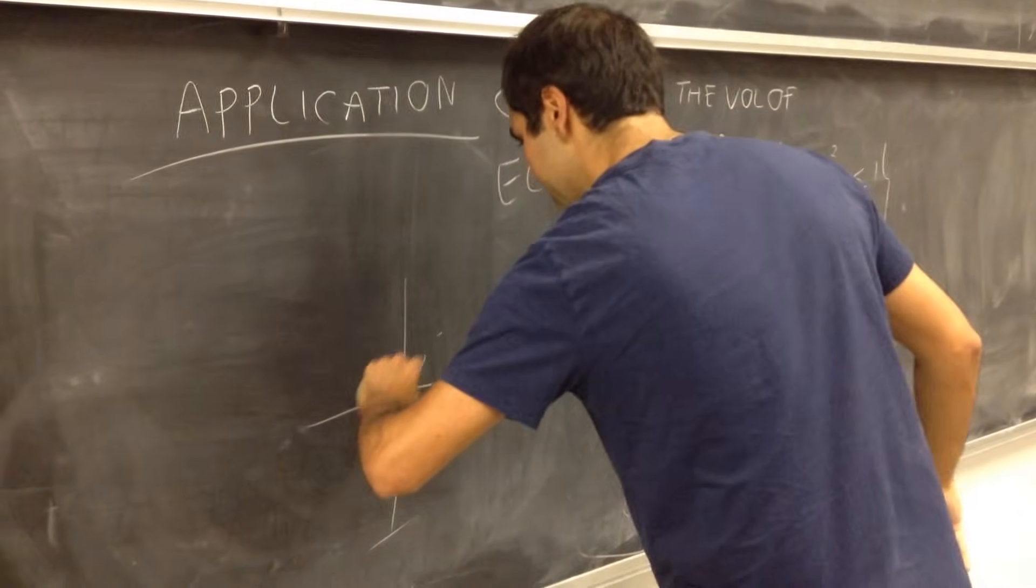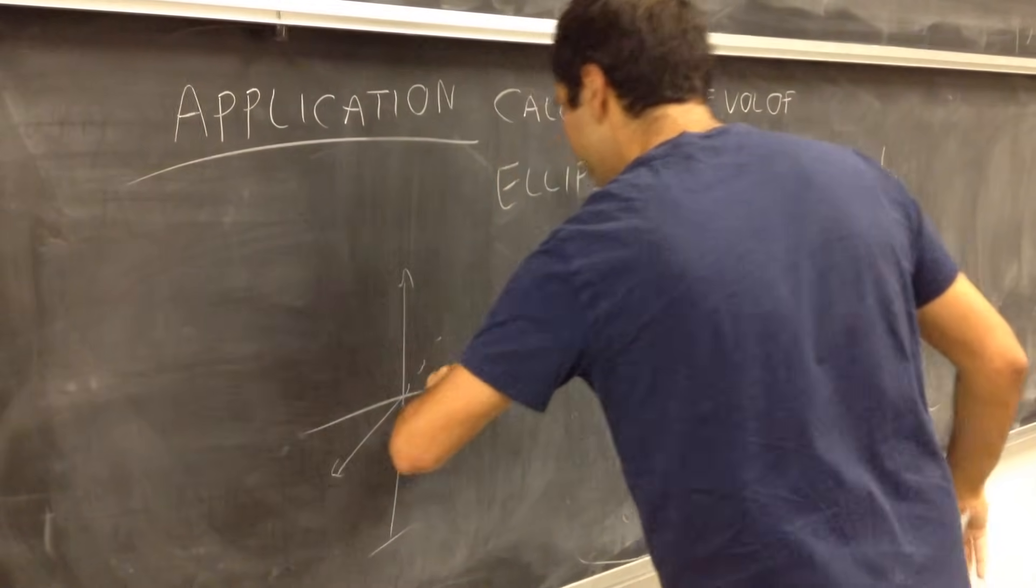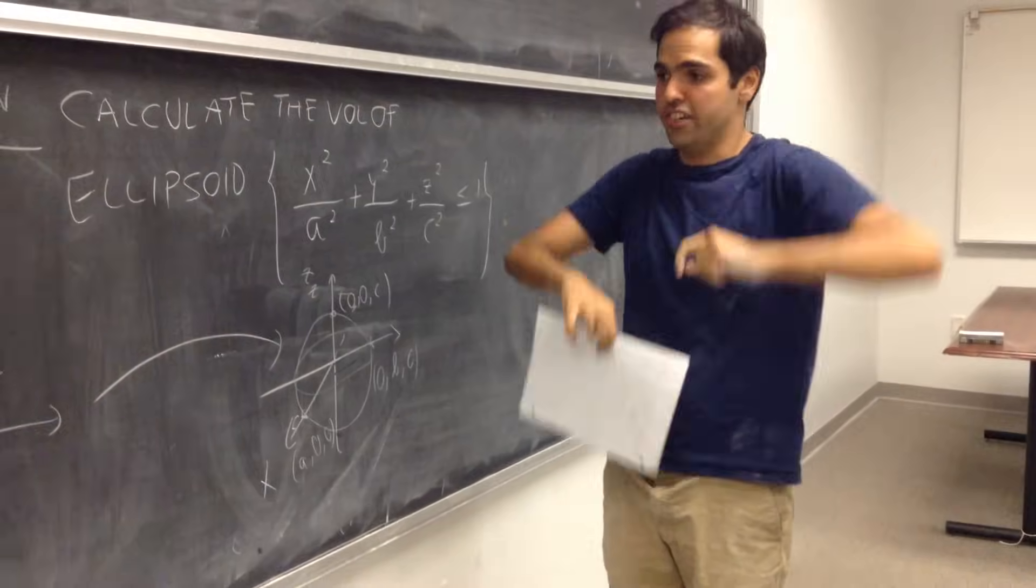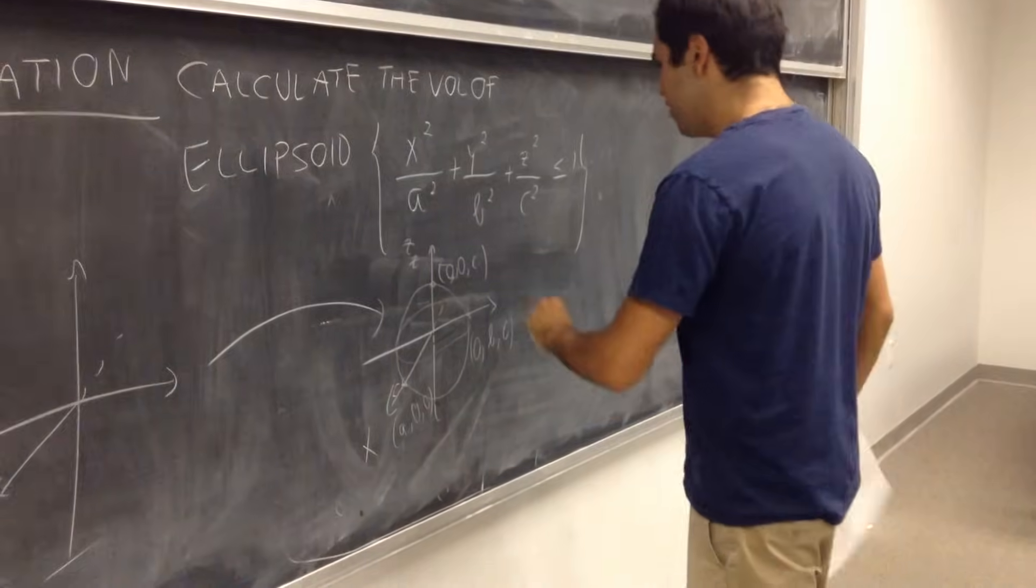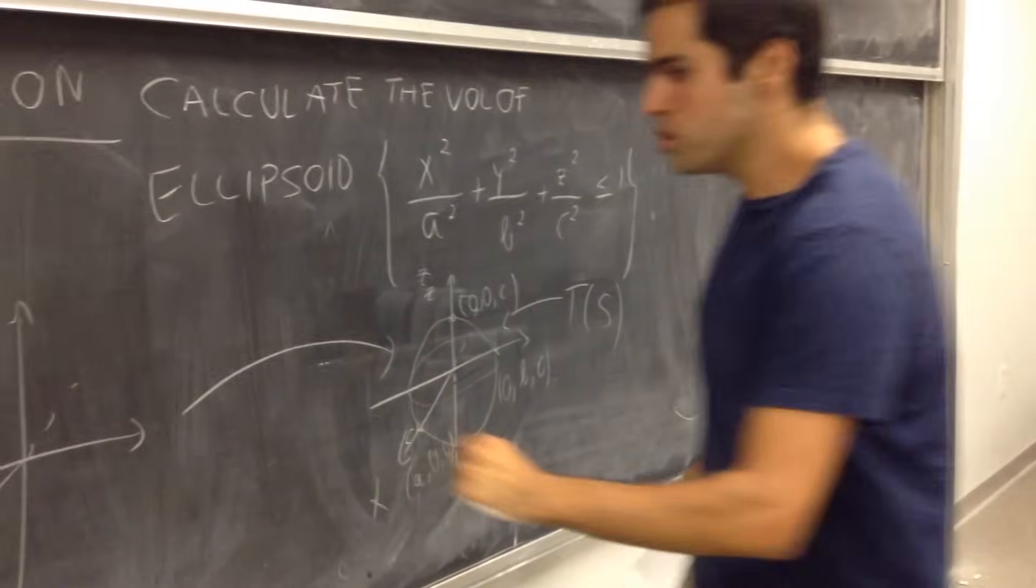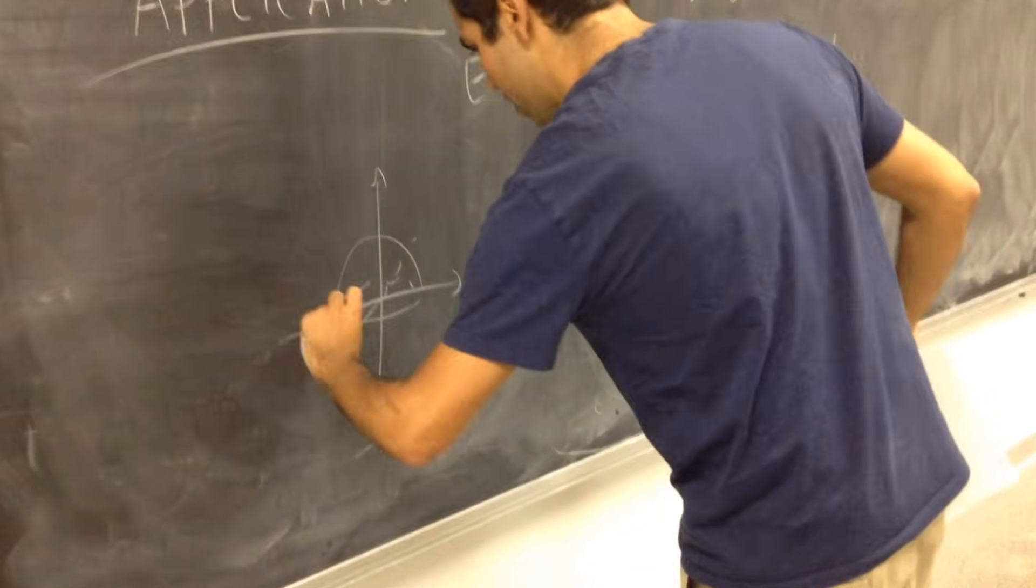Well, notice, if you think about this, the ellipsoid is just a stretched out sphere. So, if you think of this as T of S, well, S should be the regular sphere of radius 1.